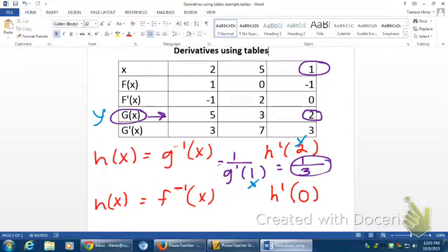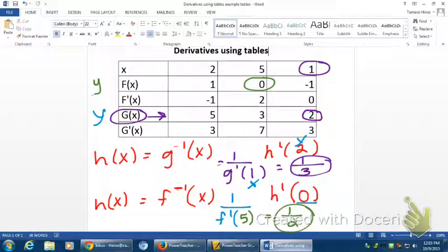On the next one, it's 1 over f prime of... This time, the y value is 0. And I'm going to go to the f's, because f is what I'm looking at in this problem. I'm looking for 0. My y value is 0. So what's my x value? 5. And then I have 1 over f prime of 5, which is 2.